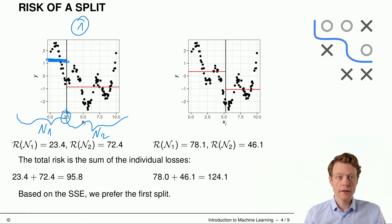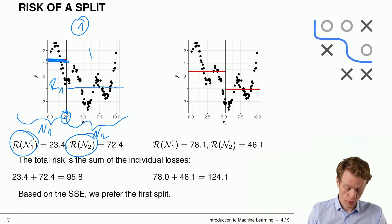And in each of these nodes we can compute an optimal constant prediction. On the left hand side that's more or less 1 point something, on the right hand side that's minus 0.8 more or less. And then with these optimal constant predictions, we can compute a risk on the left hand side and a risk on the right hand side. So we have a risk here and we have a risk there. And for getting a total risk, we just sum the two values. So we have 23.4 plus 72.4 gives some result here.